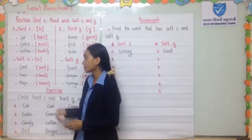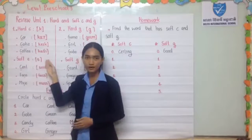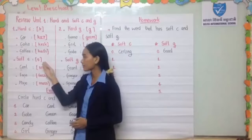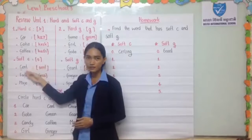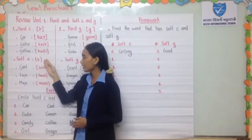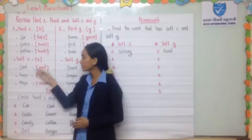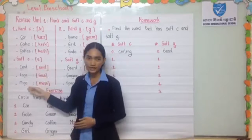For soft C, it makes the 'S' sound. Examples are: Friend, Friends, and Mice.